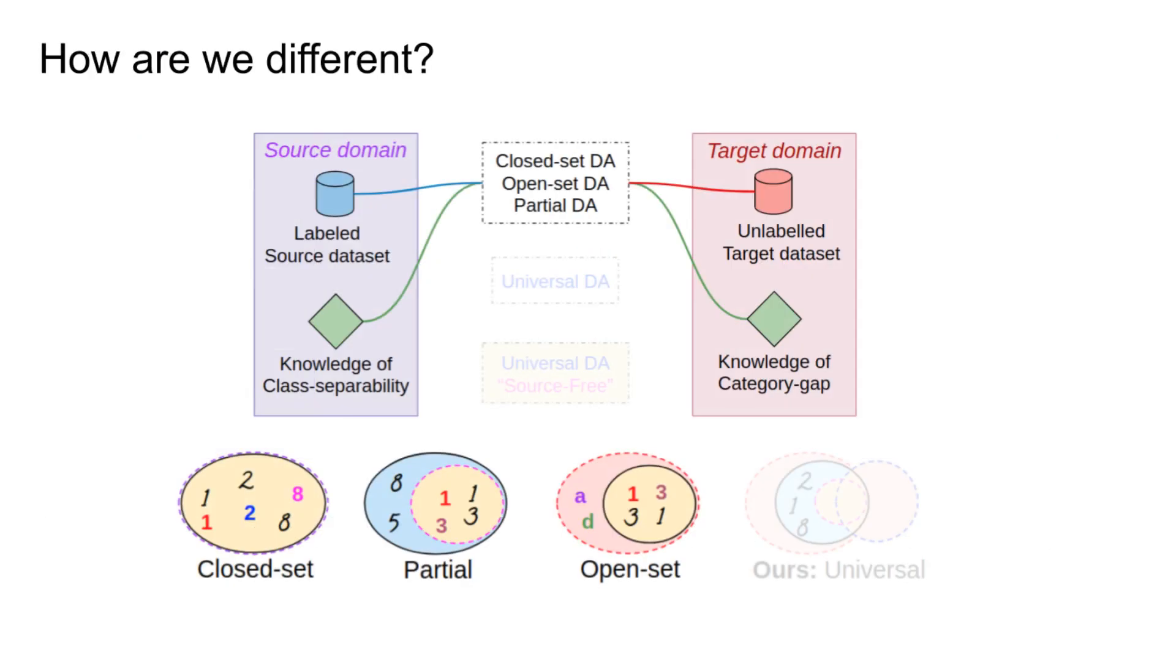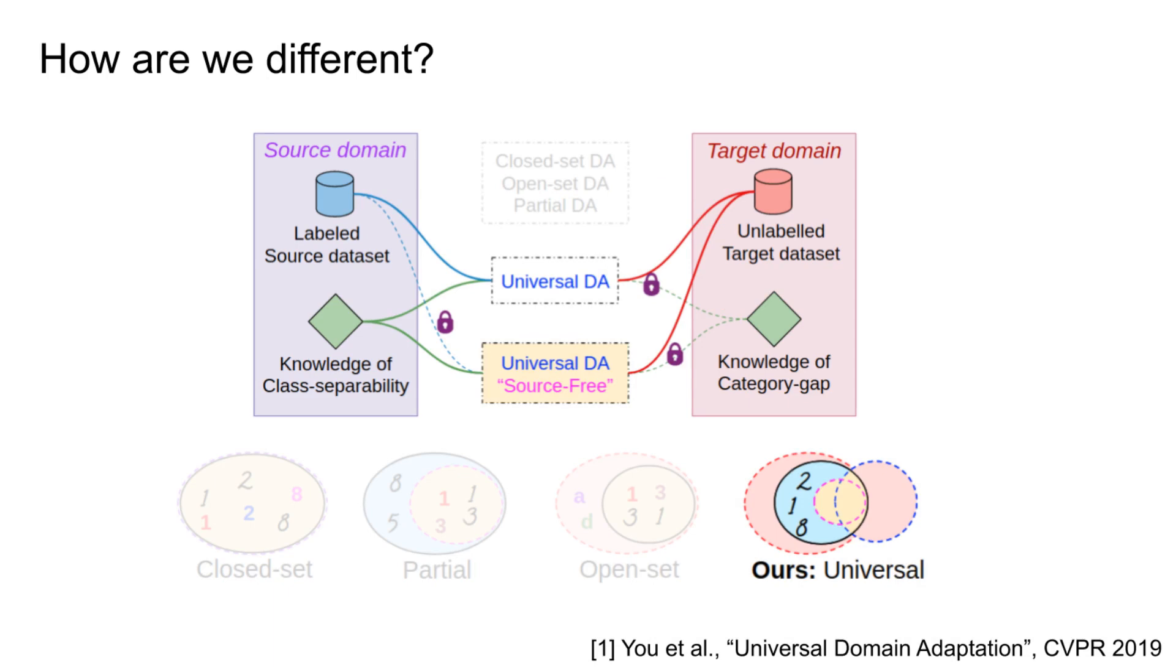Classical domain adaptation methods demand access to co-existing source and target domains and require the knowledge of category gap. In contrast, our method is designed to handle unknown category gaps and does not require the source-training data during adaptation, making it suitable for real-time adaptation after model deployment.